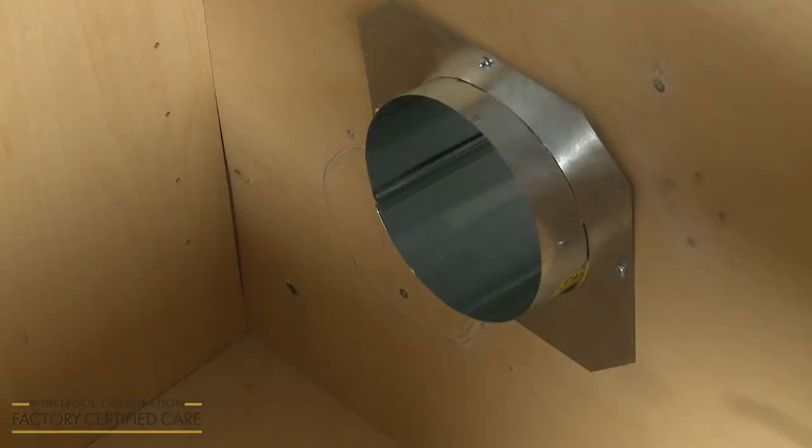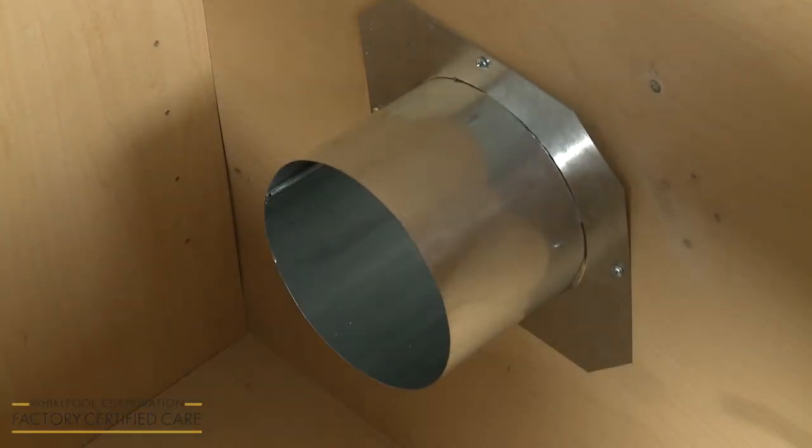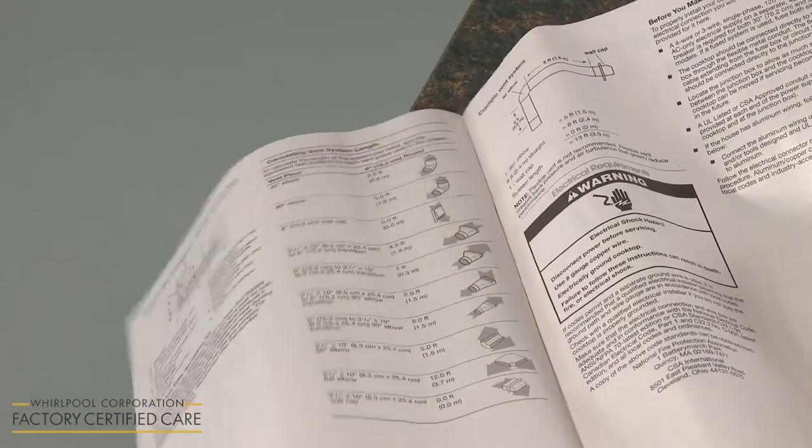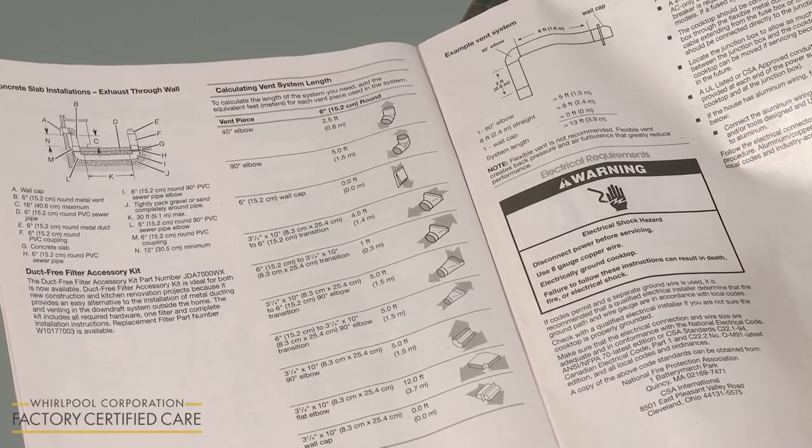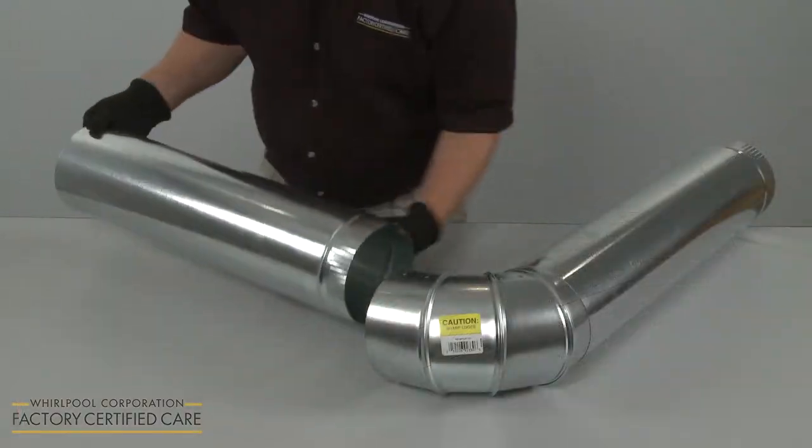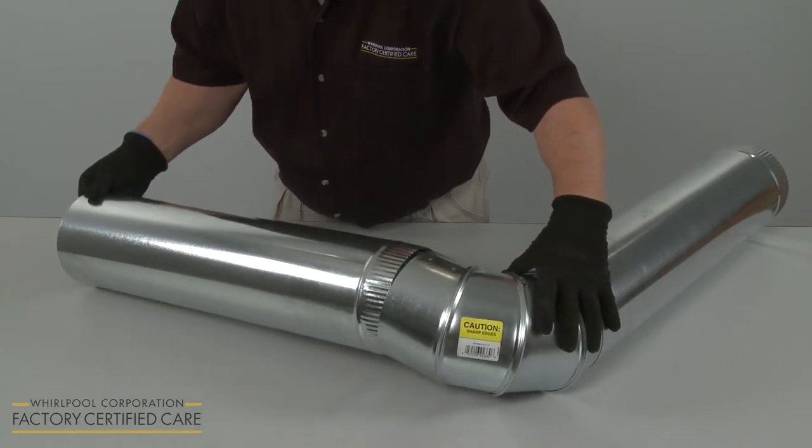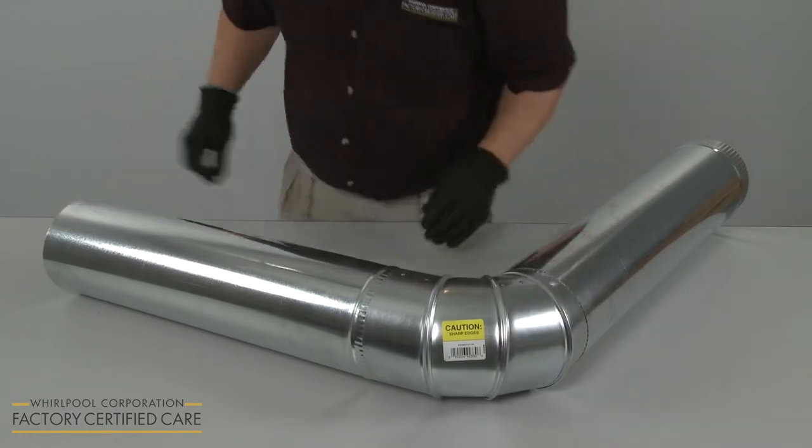Unless you're using a duct-free filter accessory kit, the cooktop must be exhausted outdoors. Refer to the vent system charts in the installation manual to determine the size and number of vent sections and elbow joints required. No more than three 90-degree elbow joints should be used, and there should be a minimum of 18 inches of straight venting between the elbow joints.